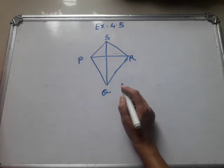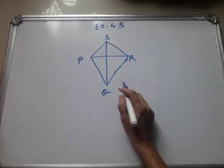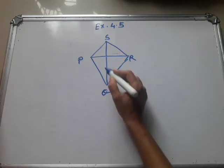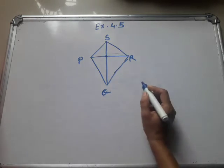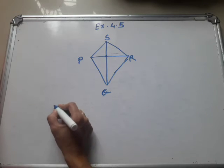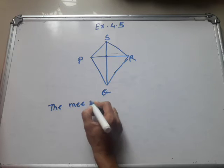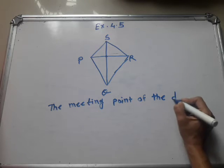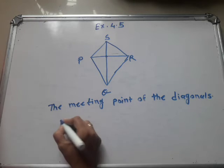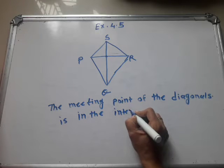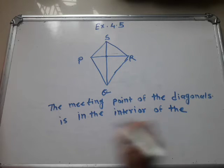Now you write the question: is the meeting point of the diagonals in the interior or exterior of the quadrilateral? The diagonals are PR and SQ, and their meeting point — see, this point is in the interior. So you have to write this sentence: the meeting point of the diagonals is in the interior of the quadrilateral.